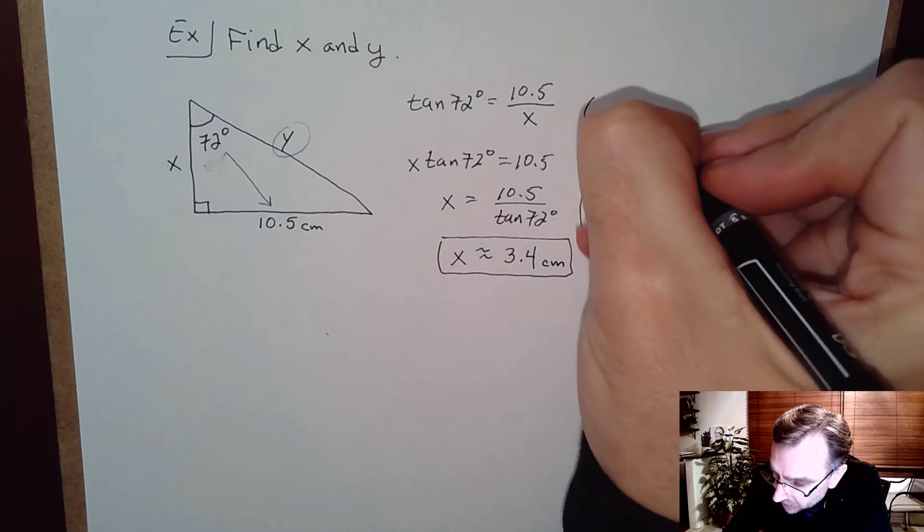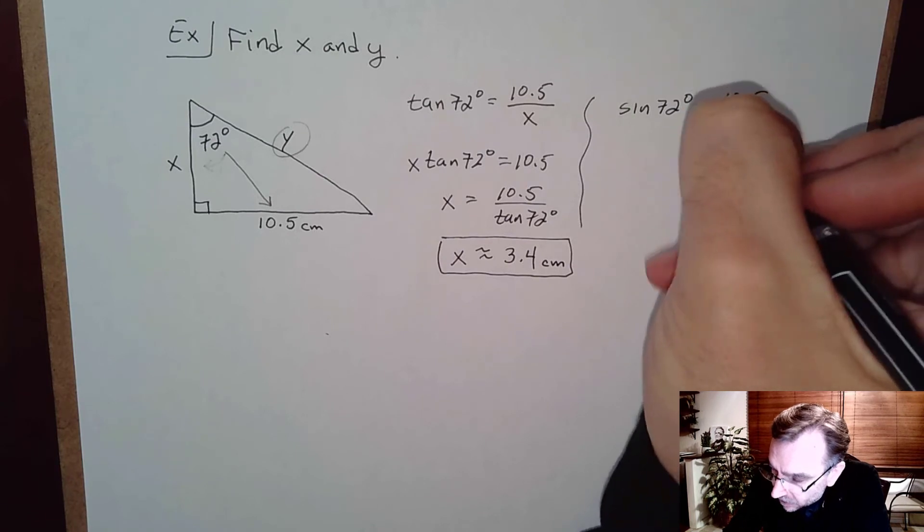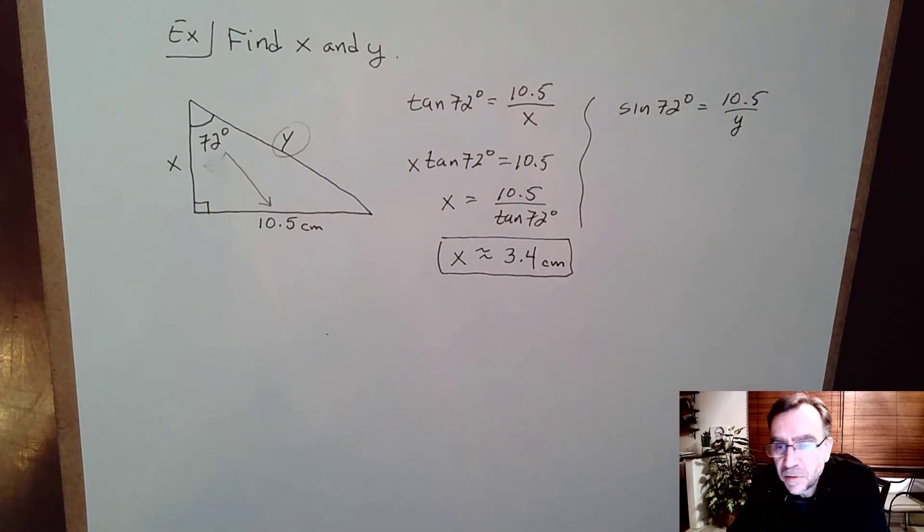Right, so we can write sine of 72 degrees is equal to 10.5 divided by y, right, opposite over hypotenuse this time.